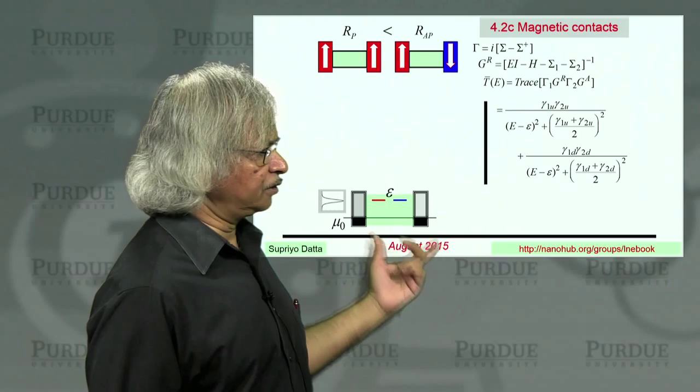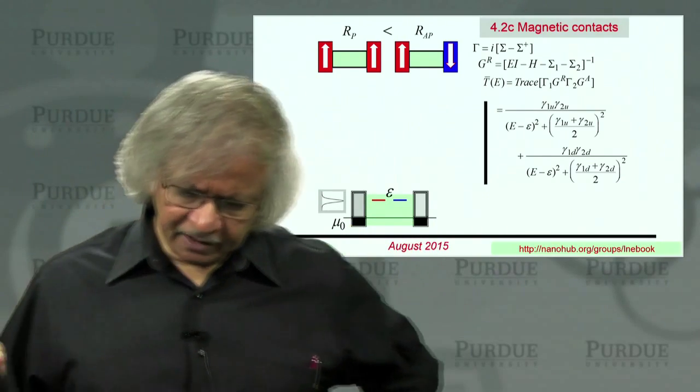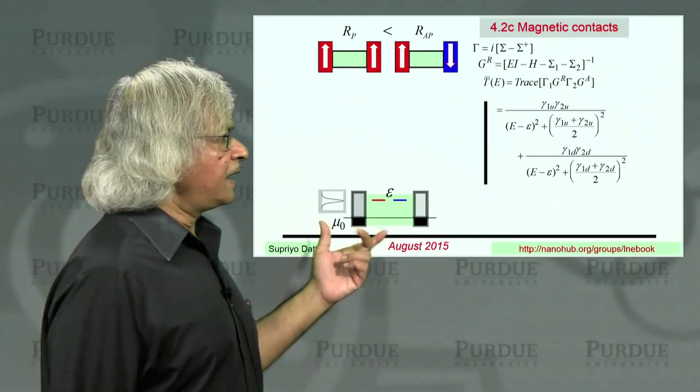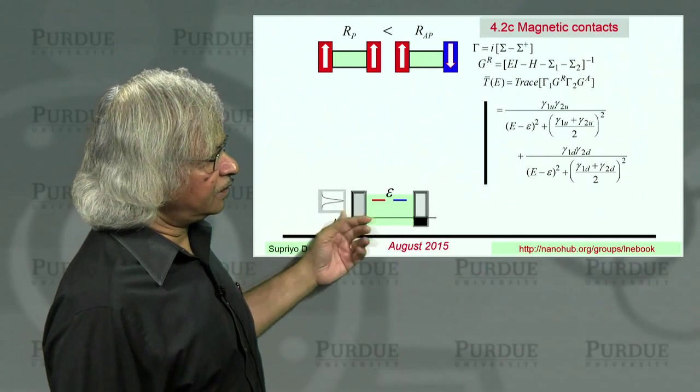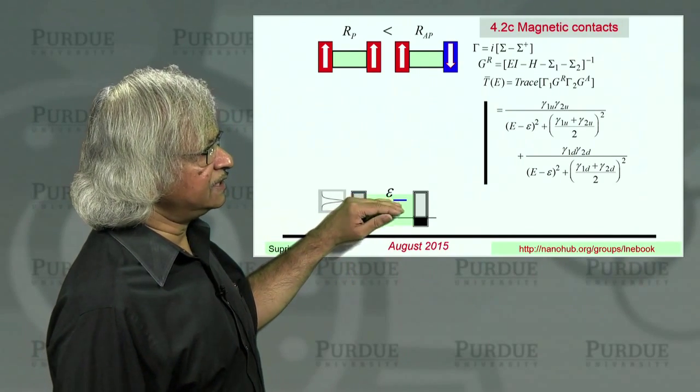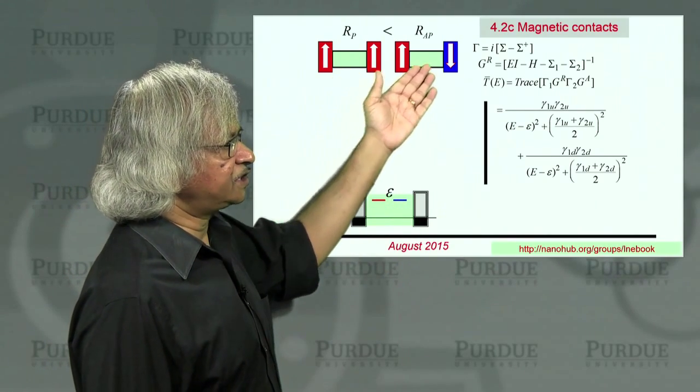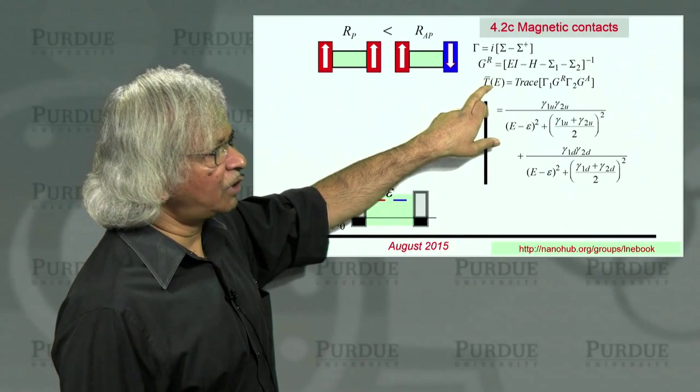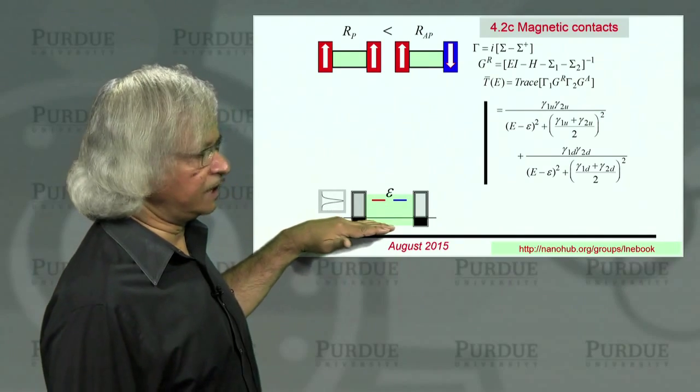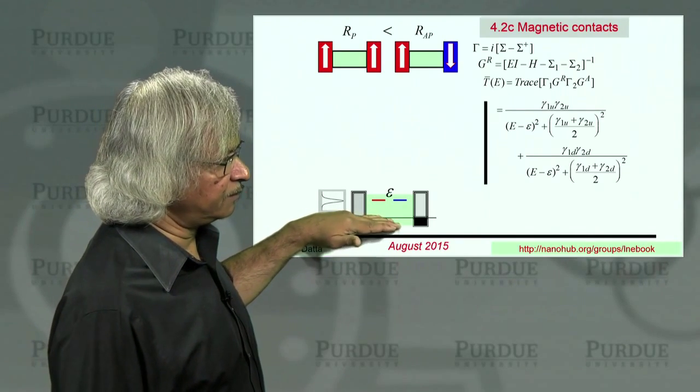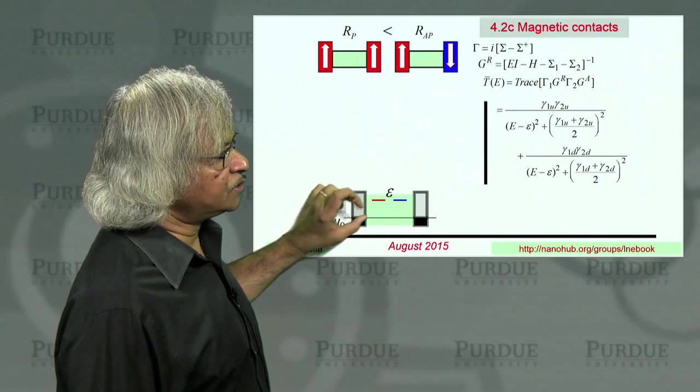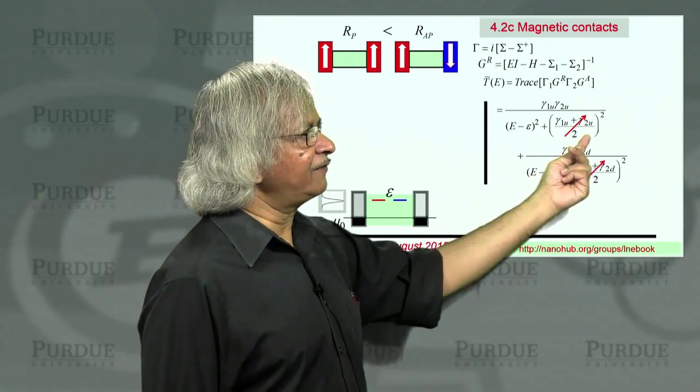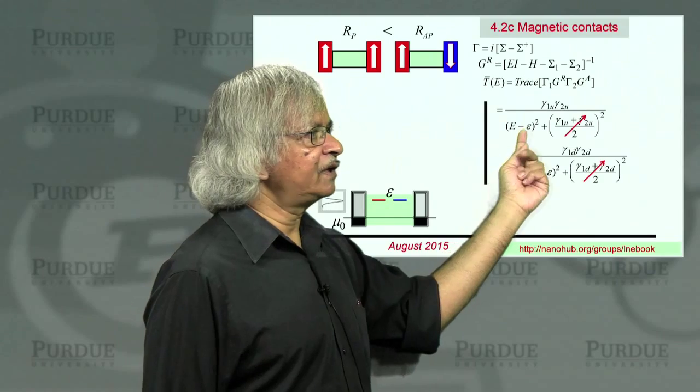So finally, the answer will look something like this. Now the next thing I want to do is make a little approximation which isn't really necessary. I just want to simplify the algebra a little bit here. In general, you don't need to make that assumption. And that is, what we'll assume is that the Fermi level or the electrochemical potential is far below these energy levels. That is, remember, we assume that our channel has an upspin level and a downspin level, both with energy epsilon.